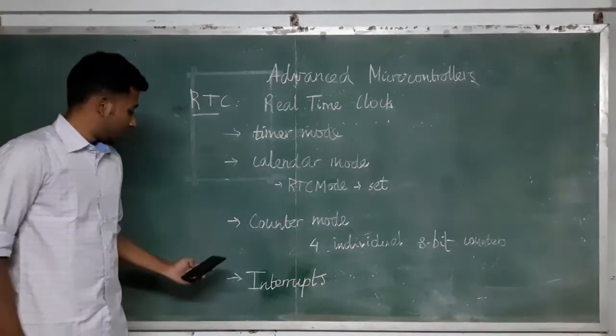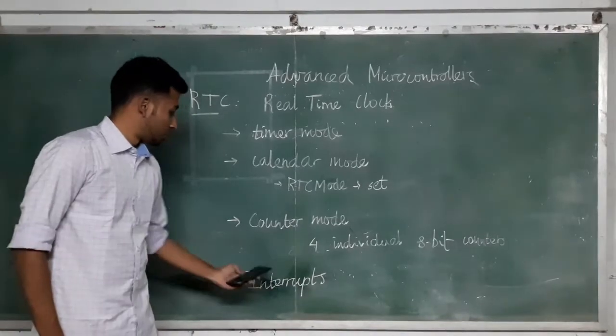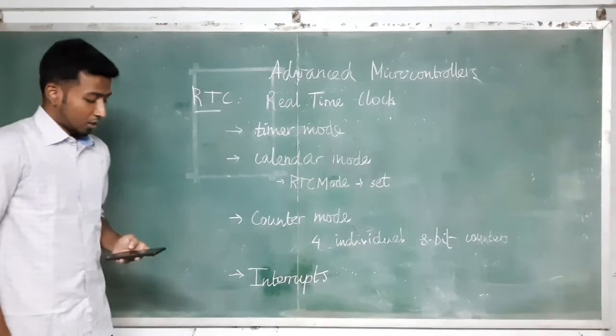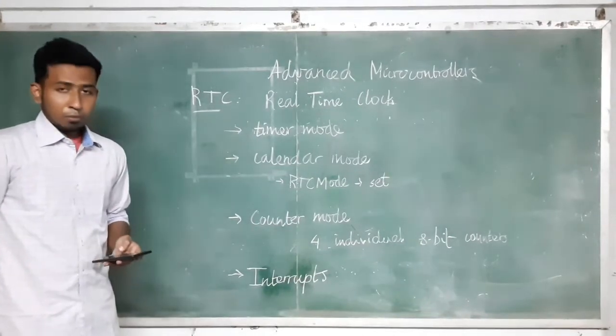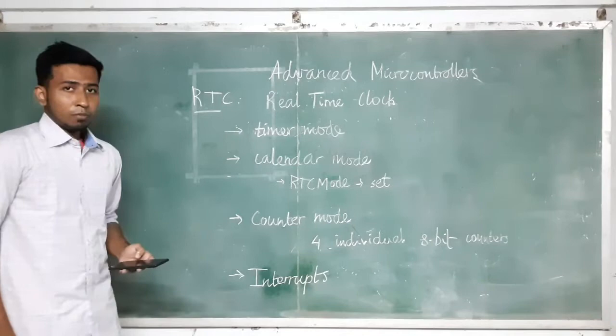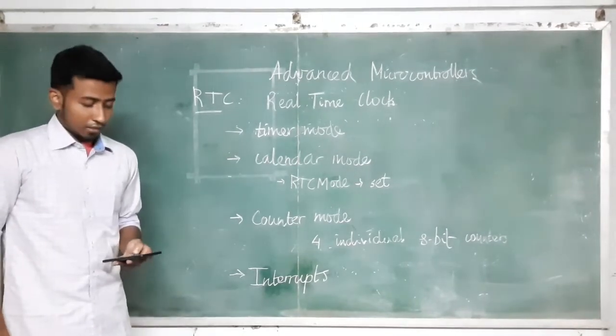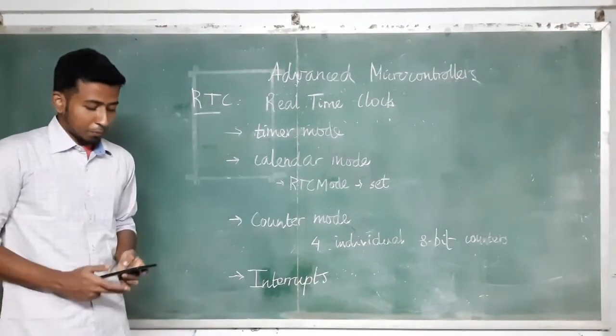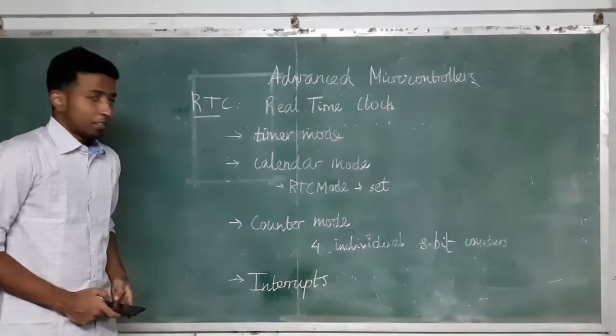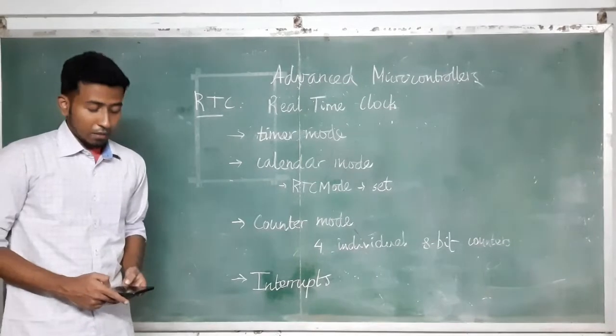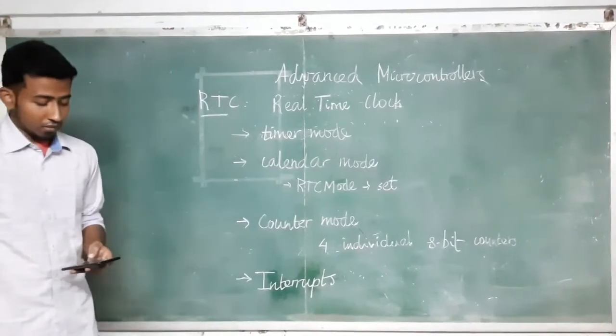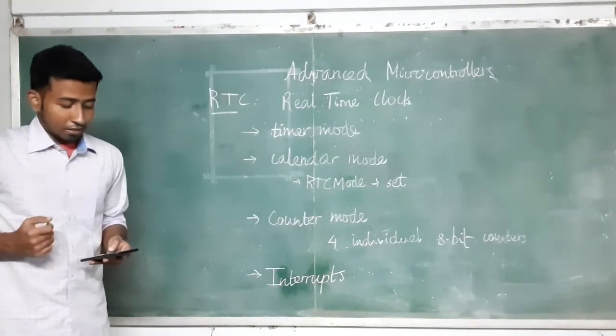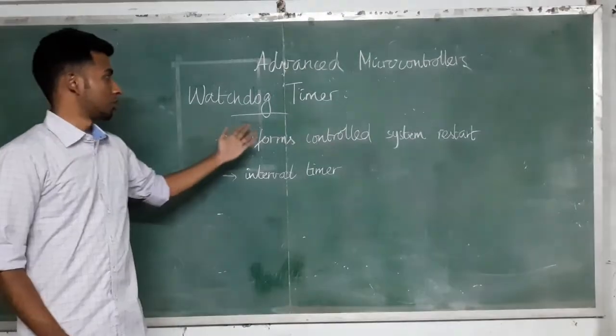There are interrupts in the real-time clock and it uses two bits for interrupt control. They are the basic timer 1 interrupt flag BTIFG and the real-time clock interrupt enable RTCIE. The real-time clock module shares the basic timer 1 interrupt flag and vector. When RTCIE is equal to 0, the basic timer 1 controls the interrupt generation. Otherwise the RTC controls the interrupt generation. We will now discuss the watchdog timer.